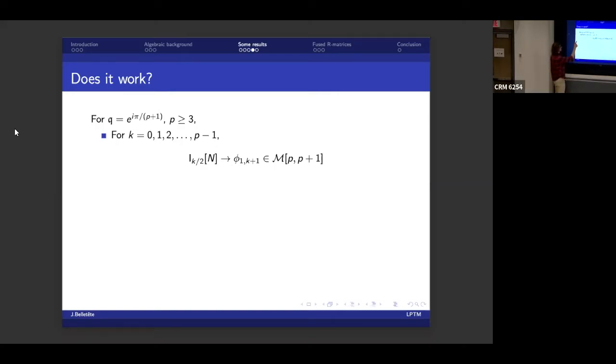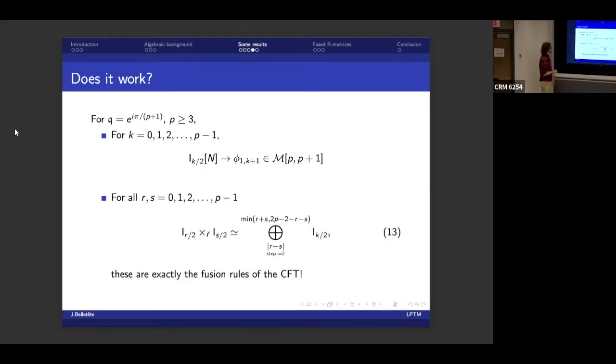And the correspondence is very simple. For k going from 0 to p minus 1, the simple module with spin k/2, in a limit where n goes very large, it goes to the primary field φ_{1,k+1} in a minimal model M(p,p+1). Again, there was no CFT before, so you've never seen this before. And now what you can do, you can compute the fusion product of this simple module, and you get this lovely identity. Again, if you're not familiar with CFT, it doesn't mean anything. But if you are, you might recognize that this is exactly the same rules that are expected from CFT.